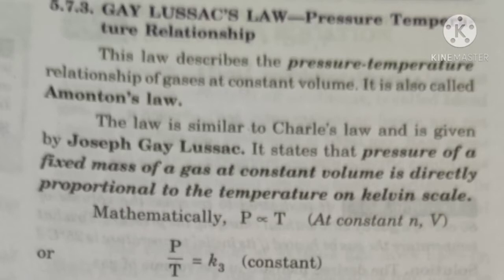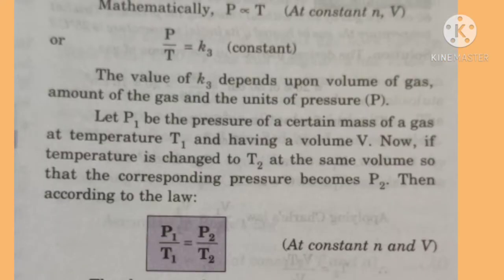The law is similar to Charles' law and is given by Gay-Lussac. It states that the pressure of a fixed mass of a gas at constant volume is directly proportional to the temperature on the Kelvin scale. Mathematically, at constant volume and constant N and V, P upon T is equal to K3, a constant.